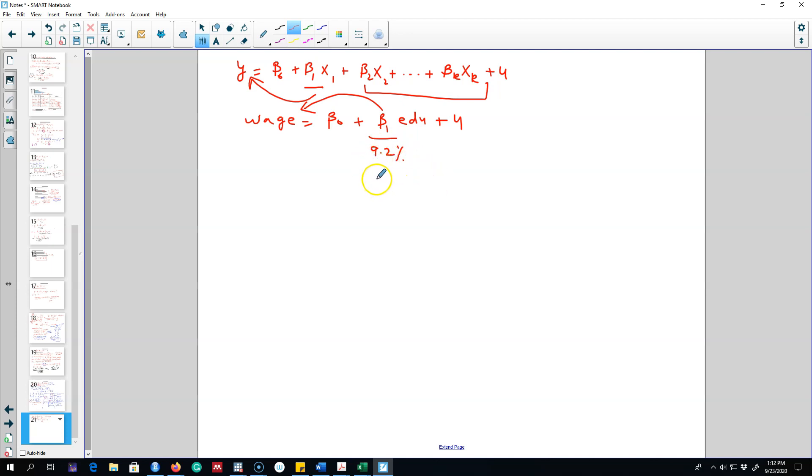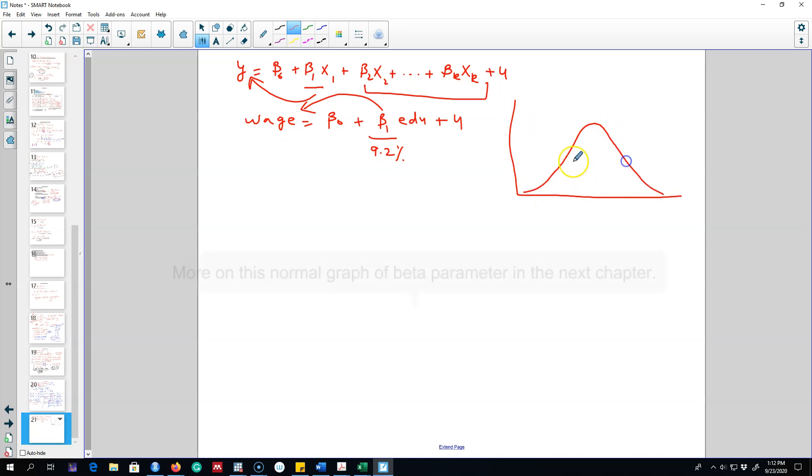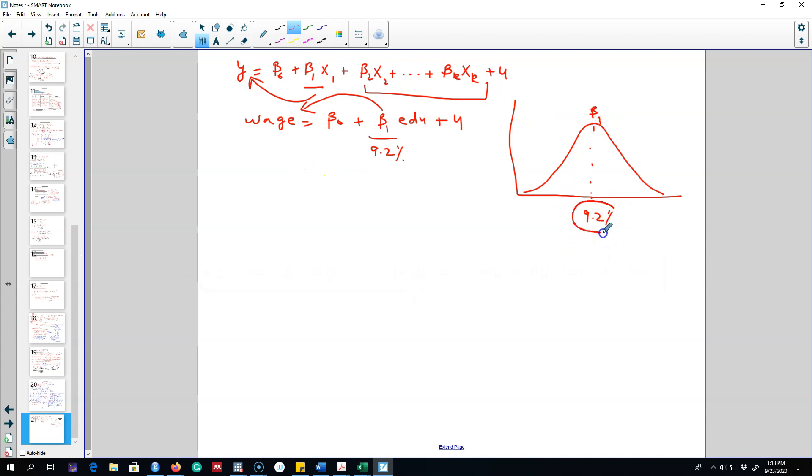That is, adding one year of extra education increases wages by about 9.2 percent. So essentially what we were finding here is that if we draw a normal curve of all the wages and the education levels, the impact of education on wages can be shown on this graph. So this is the average effect, 9.2 percent.